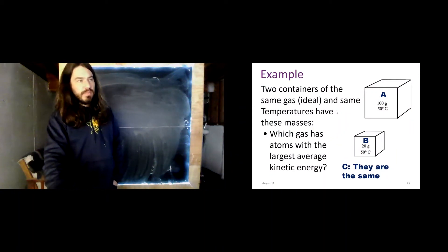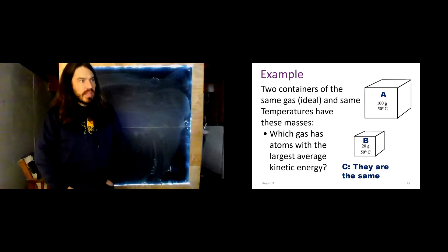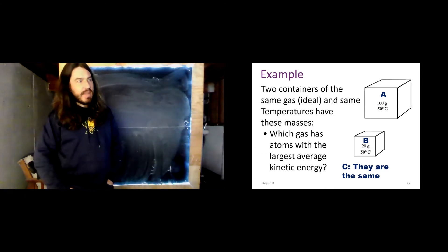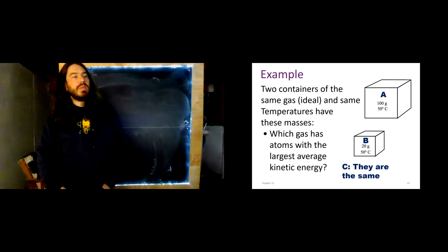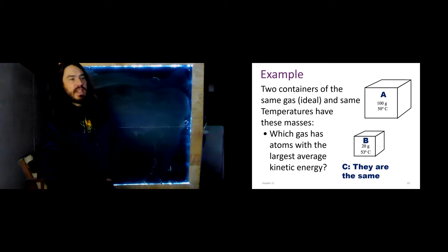Here is a quick clicker question. Two containers of the same ideal gas and same temperatures have these masses. Which gas has atoms with the largest average kinetic energy? So here we see 100 grams of a gas at 50 degrees Celsius, and here we see a box with 20 grams of a gas at 50 degrees Celsius. Which box has the largest average kinetic energy? Or are they the same? Why don't you pause the video and think about it?